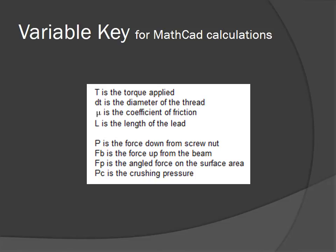As you can see here, the variable key for our calculations that you will see later on: T is the torque applied, DT is the diameter of the thread, Mu is the coefficient of friction, and L is the length of lead.